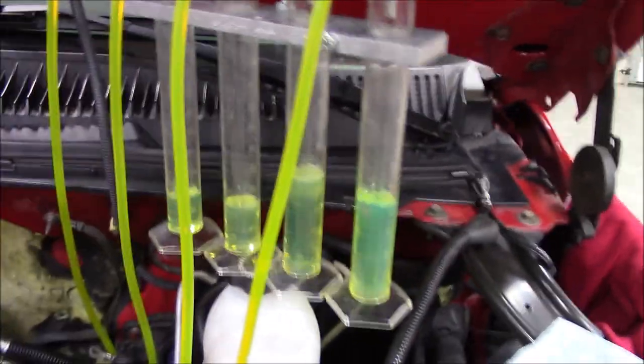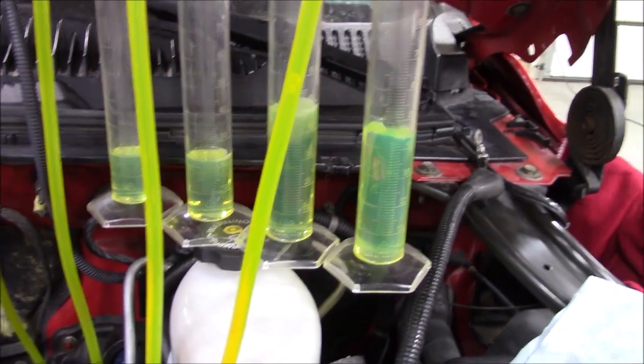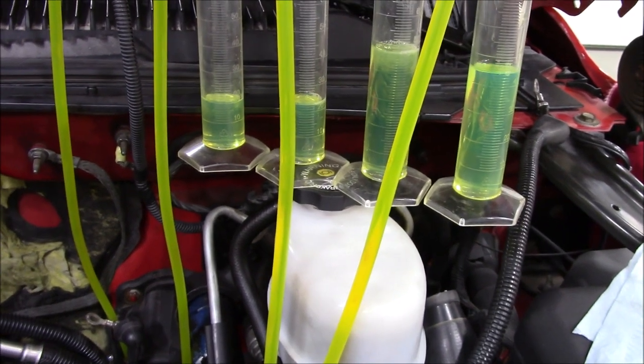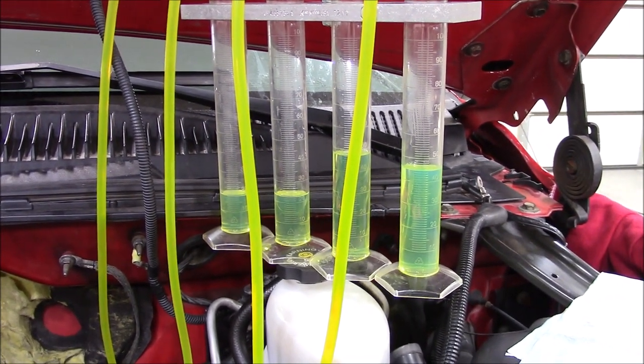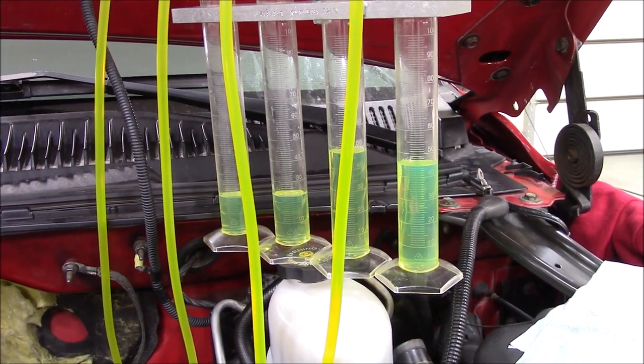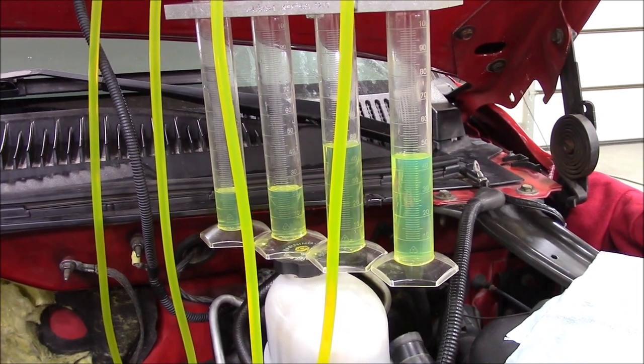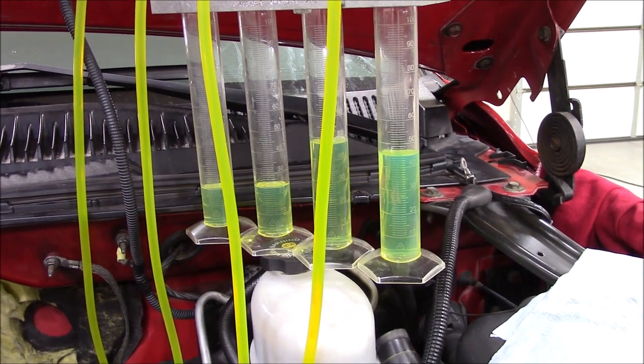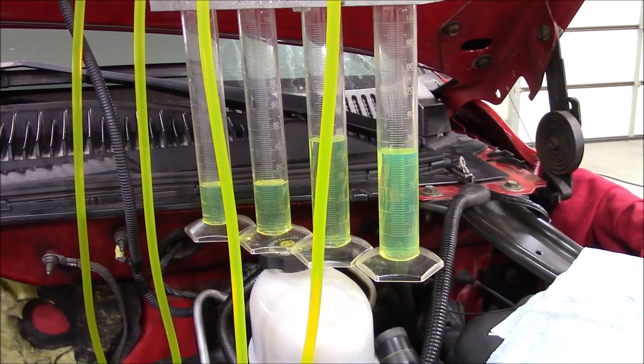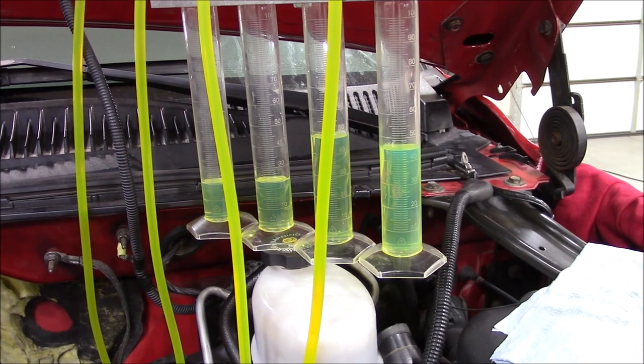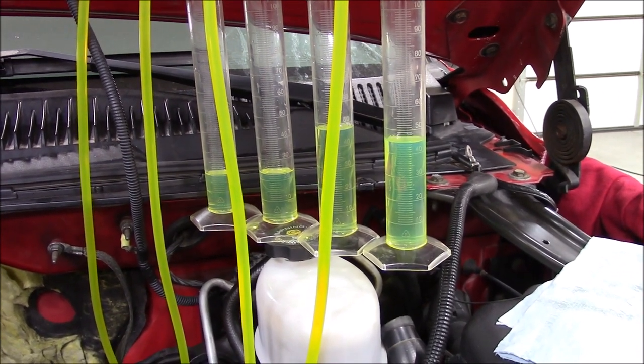All right, so we cranked for 15 seconds. Now we're going to let the bubbles dissipate in the fuel a little bit so we can get an accurate reading. Okay, so on that test, cylinder number two was at 45 for a gain of two milliliters. Cylinder four is 48 for a gain of five milliliters, so that was definitely a fail. Cylinder number six is at 23, so it's a gain of three milliliters, and number eight is 19 for a gain of two.